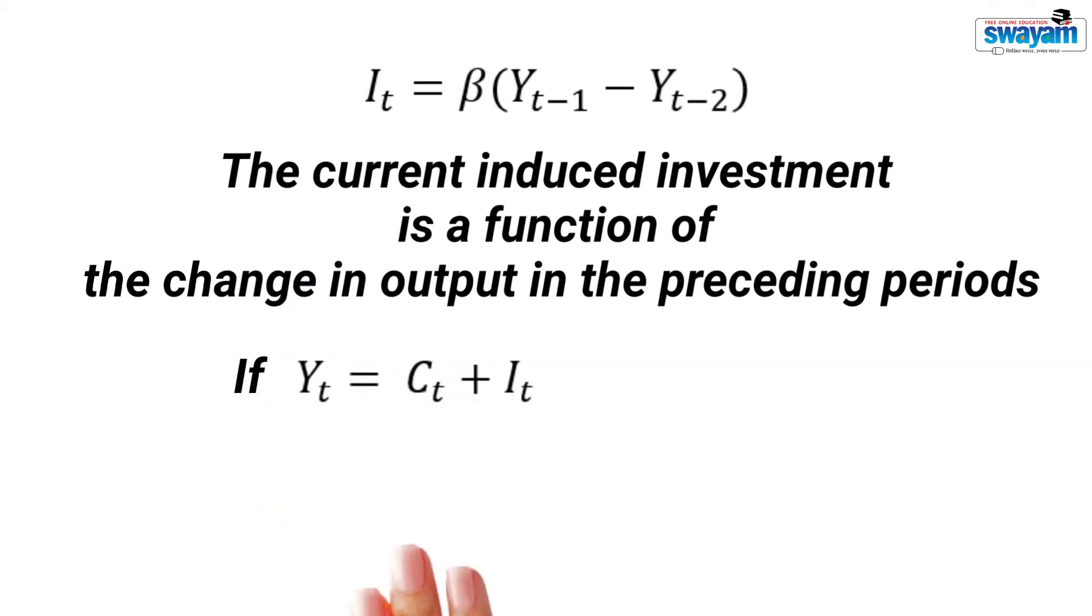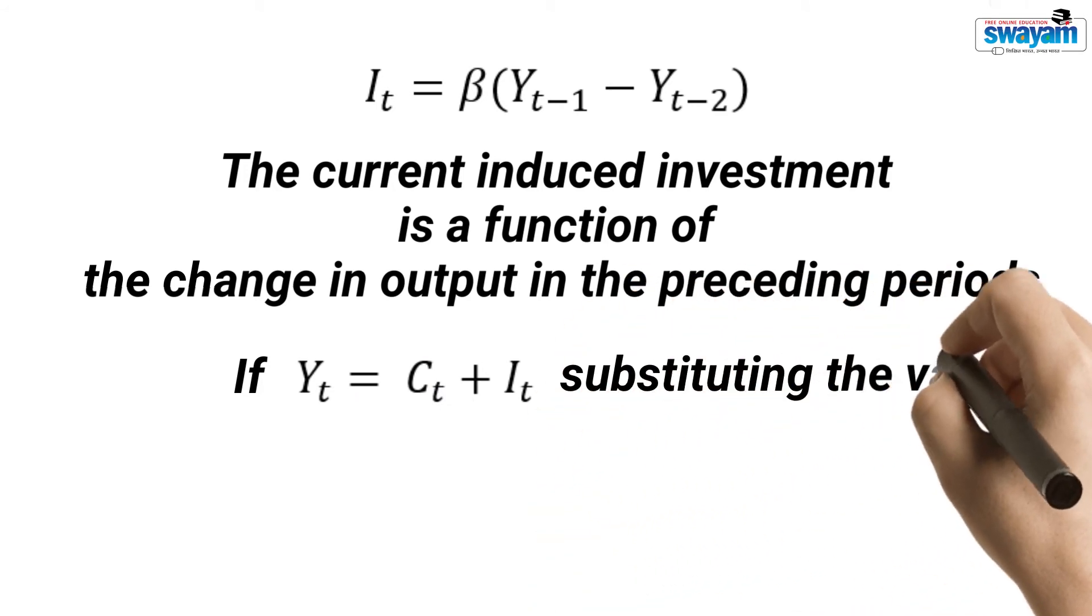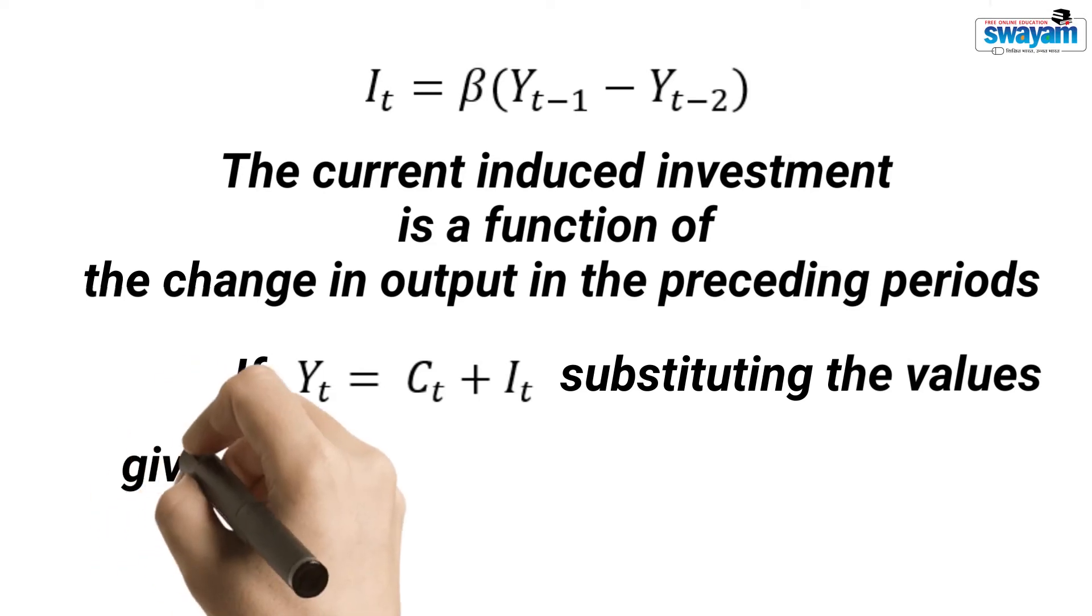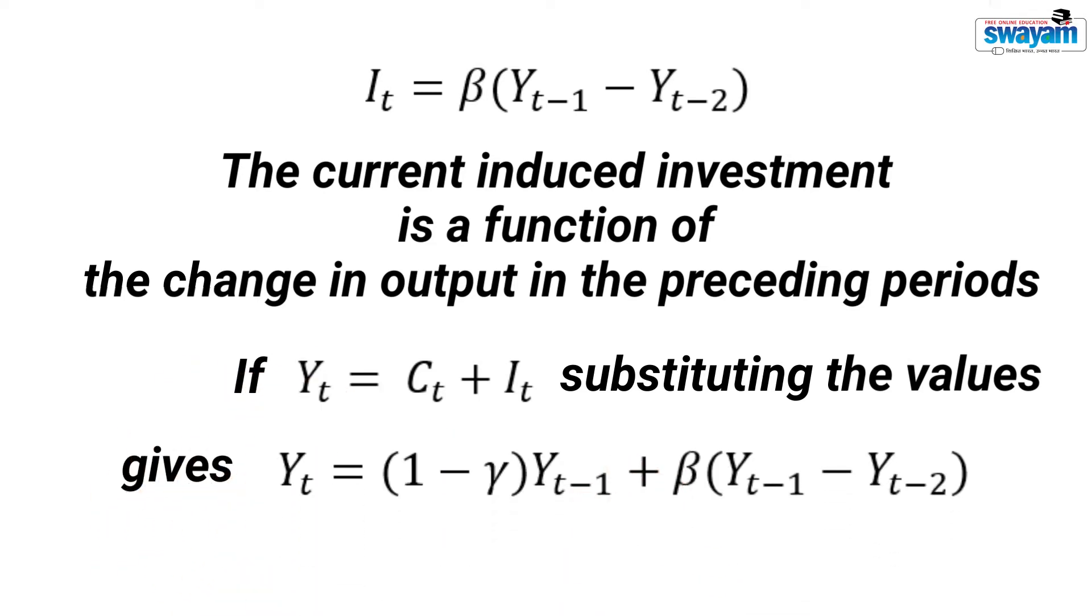If income is the sum of the consumption and investment, substituting the values and simplifying gives this result. This is again a second-order difference equation.